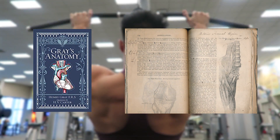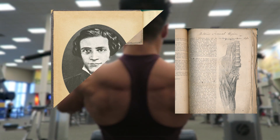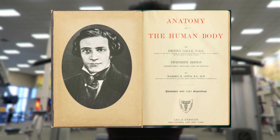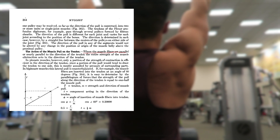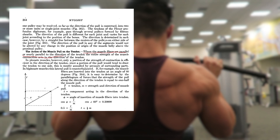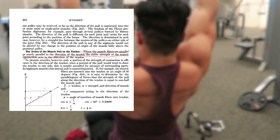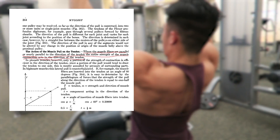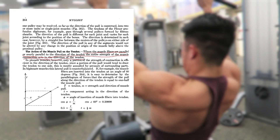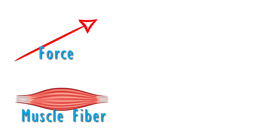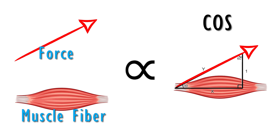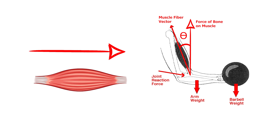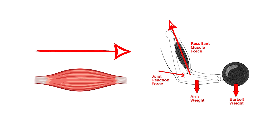According to Gray's Anatomy — the 20th edition of the book written by Henry Gray and revised by Warren Lewis, not the TV show — where the muscle fibers are parallel or nearly parallel to the direction of the tendon, the entire strength of the muscle contraction acts in the direction of the tendon. In other words, the force acting on a muscle fiber is proportional to the cosine of the angle between the line of pull and the muscle fiber orientation. Thus, the more aligned the line of pull is with the muscle fiber, the greater the force acting on that muscle fiber.